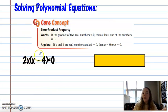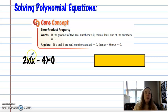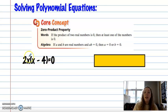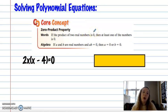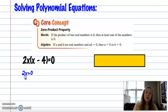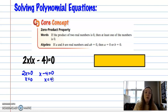This expression is already factored. To find what makes it equal to zero, we set each piece equal to zero — because if one piece is zero, the whole product is zero. That's what the zero product property says: if the product of two real numbers is zero, then at least one of them is zero. So 2x = 0 gives x = 0, and x minus 4 = 0 gives x = 4. My two solutions are zero and four.